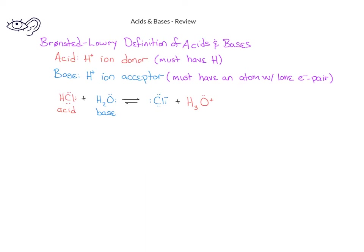If we were to switch our focus and consider this reaction moving from right to left, we would see a different pair of acids and bases. Moving from right to left, we see that the hydronium ion has 3 hydrogens and the water has 2, so the hydronium ion would be acting as an acid. On the other hand, the chloride ion, with many lone pairs of electrons, would be gaining a hydrogen ion, so from right to left, the chloride ion would be acting like a base.